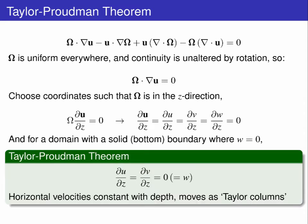And you are left with du dz equals dv dz equals 0. This is the Taylor-Proudman theorem.